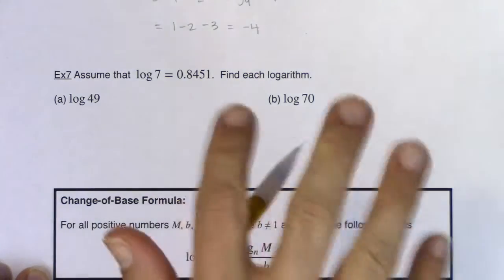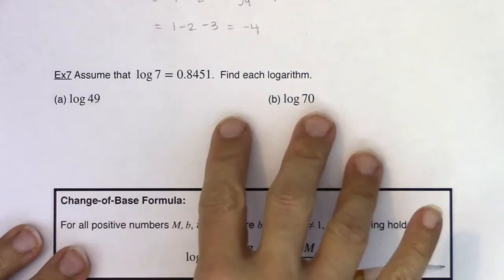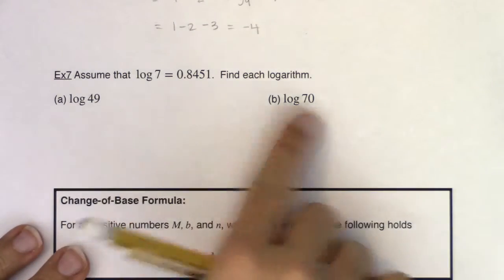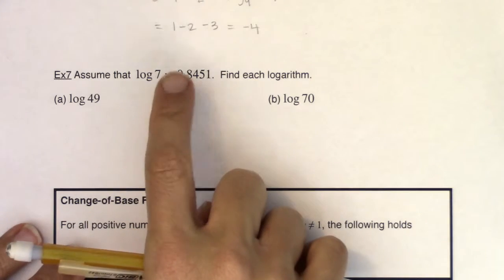Hey Math 31, welcome to example 7. In this example we're going to find these two logarithms based on a logarithm that was already given to us.